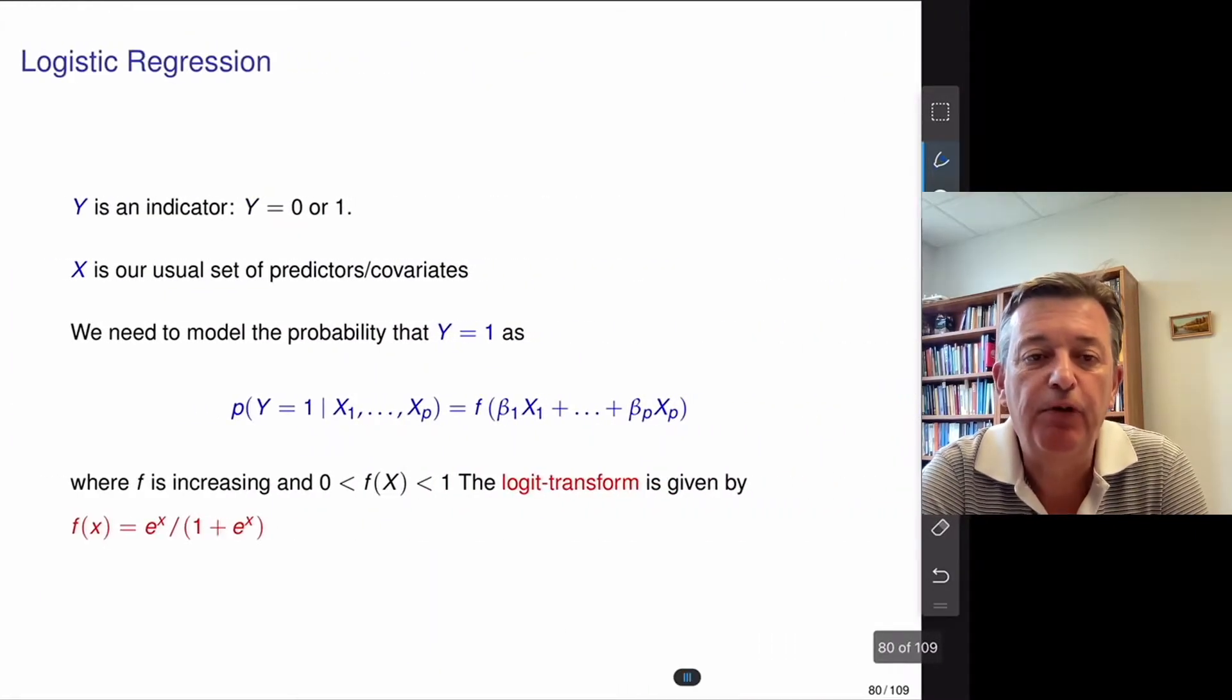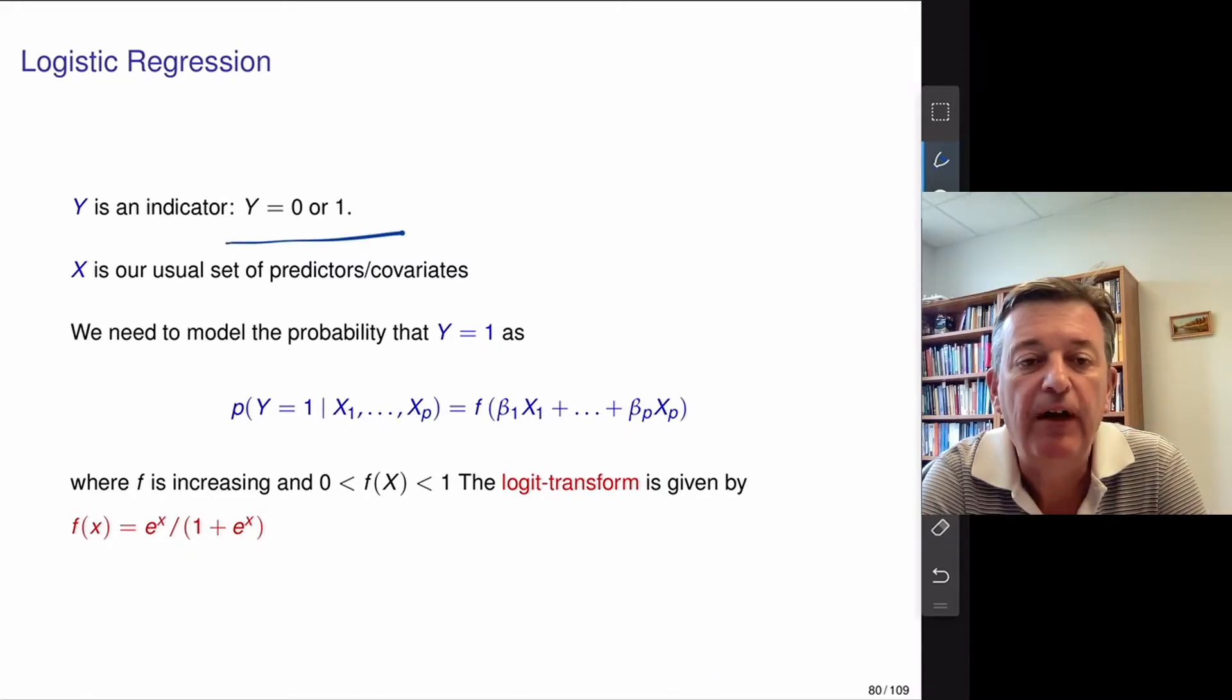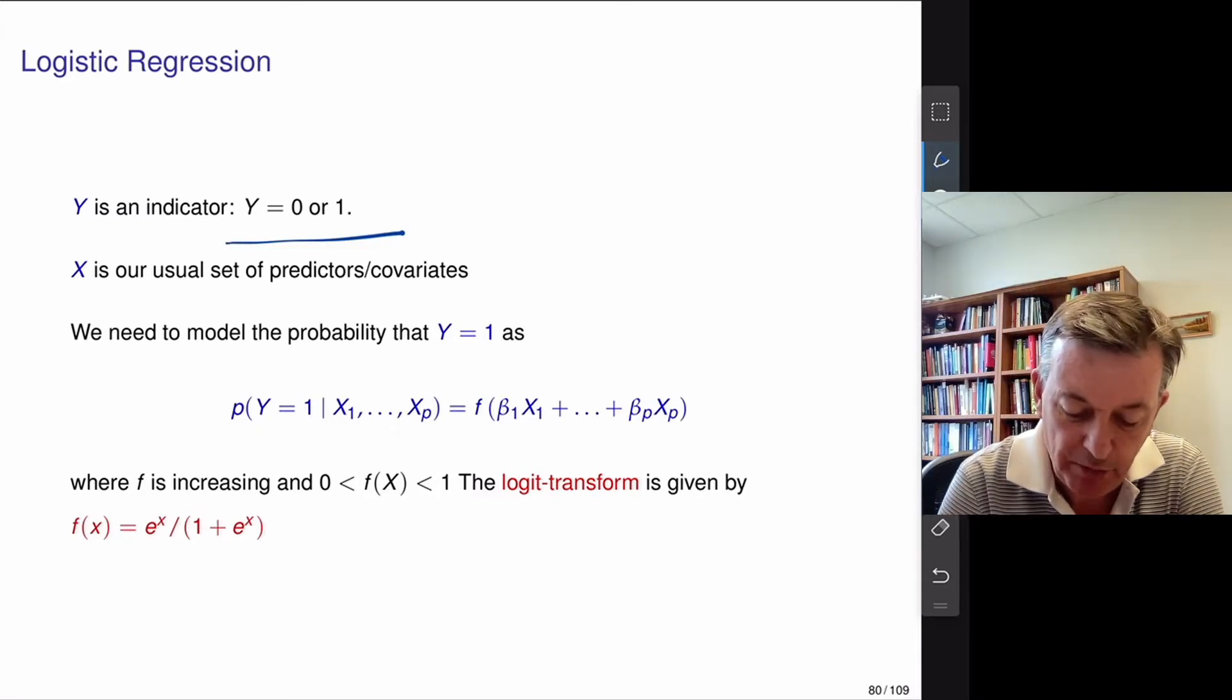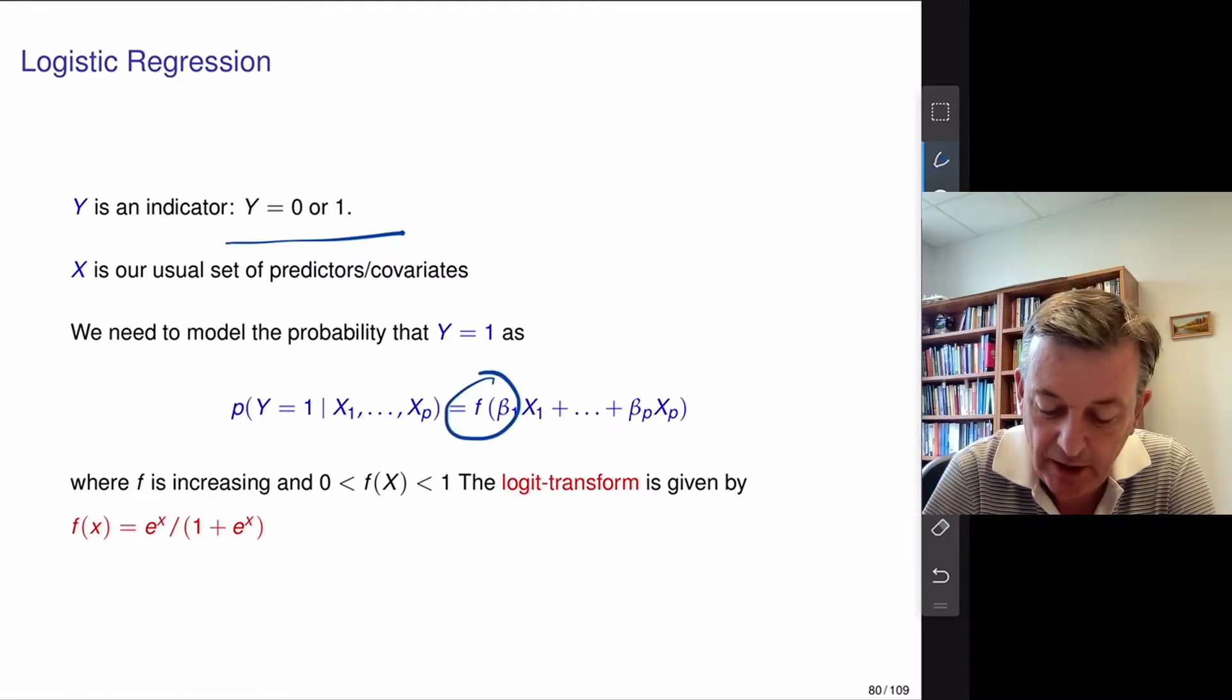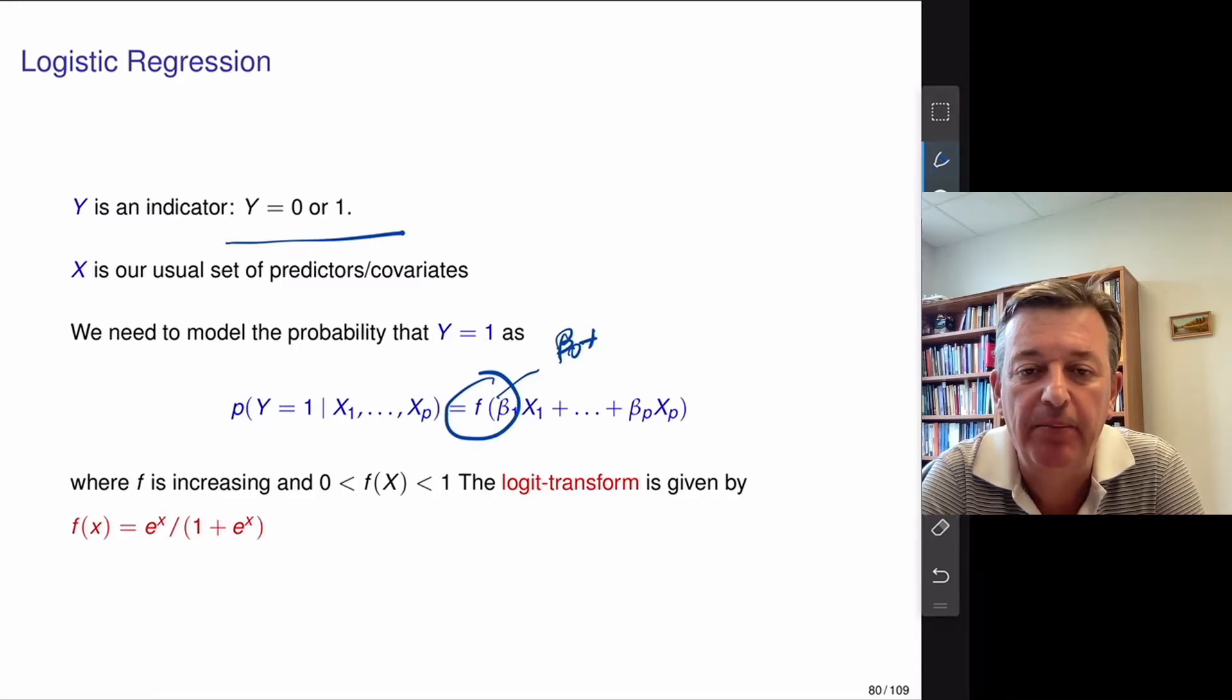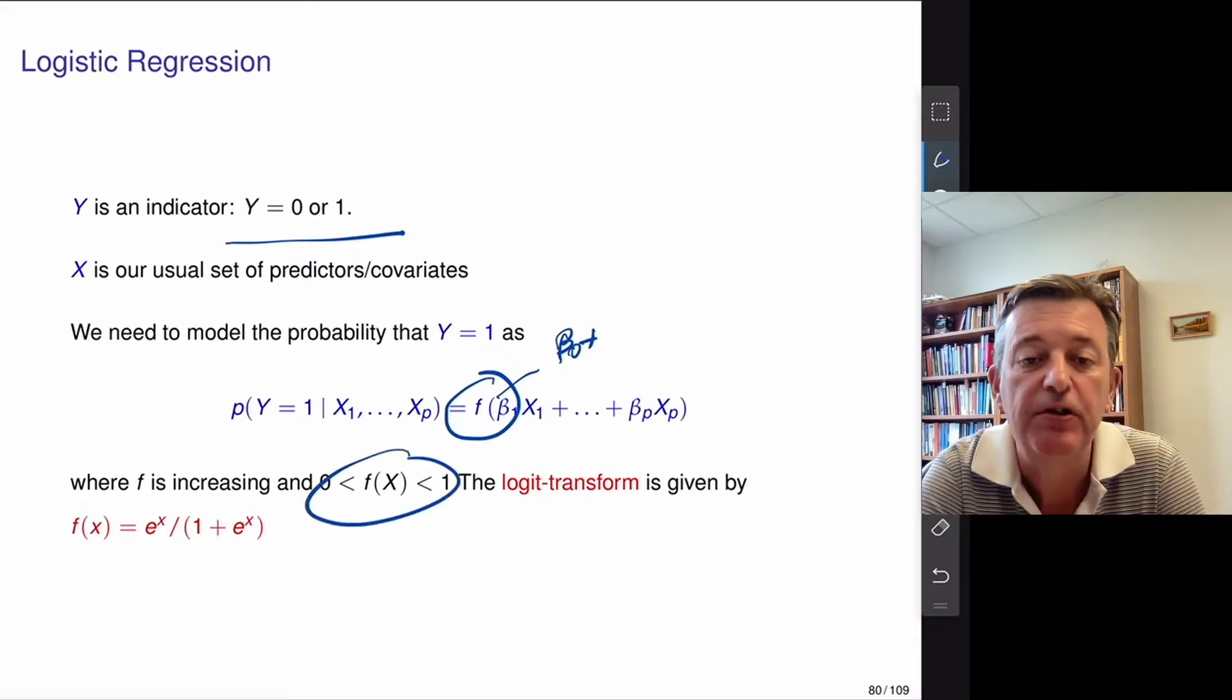So here's our formula for logistic regression. Y is essentially an indicator or dummy variable, takes value 0, 1. X is our list of predictor variables. And we're going to model the probability that y equals 1 is some function of parameters beta 1. I could introduce an intercept here too, I could have a beta 0 if I wanted an intercept. Some function of beta 1 x all the way down to beta p xp.